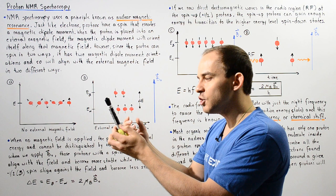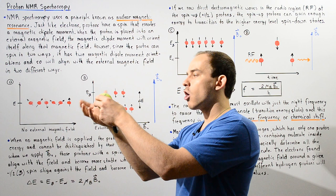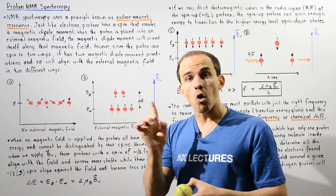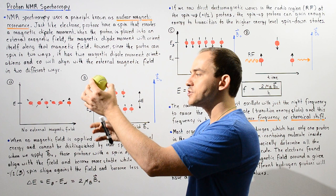On the other hand, if the electric charge spins in the reverse direction, it also creates a magnetic dipole moment. But this magnetic dipole moment points along the opposite axis — it points the other way.